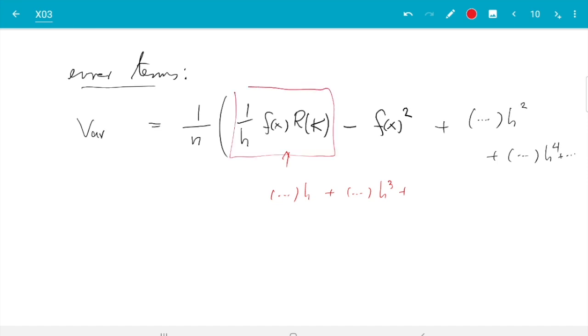So in fact for the variance we get all orders of h. The leading term, that is this one, we have 1 over h. The next term I have written here is constant, and then here we have a term which is proportional to h, h², h³, h⁴, so something times h plus something times h² and so on.